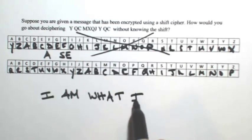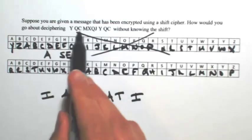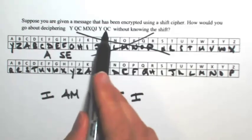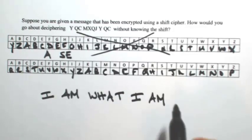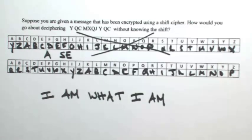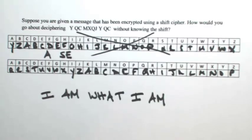The Y we know is an I, and QC is AM — we already worked that out. So just using some basic knowledge about the English language, I was able to figure out the shift by recognizing that one-letter words must be either I or A.